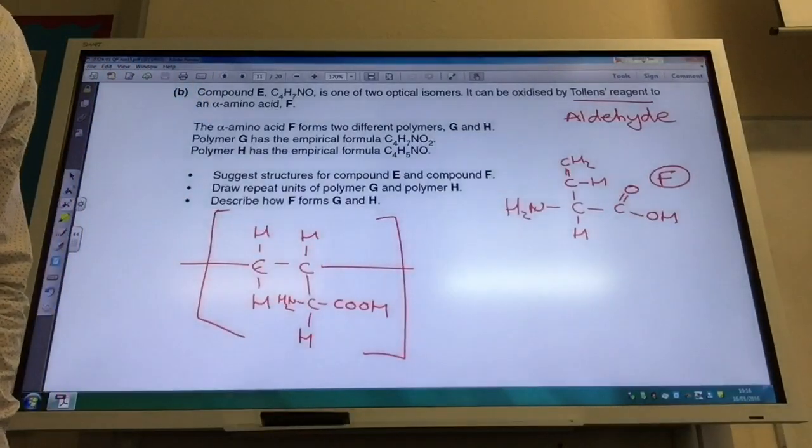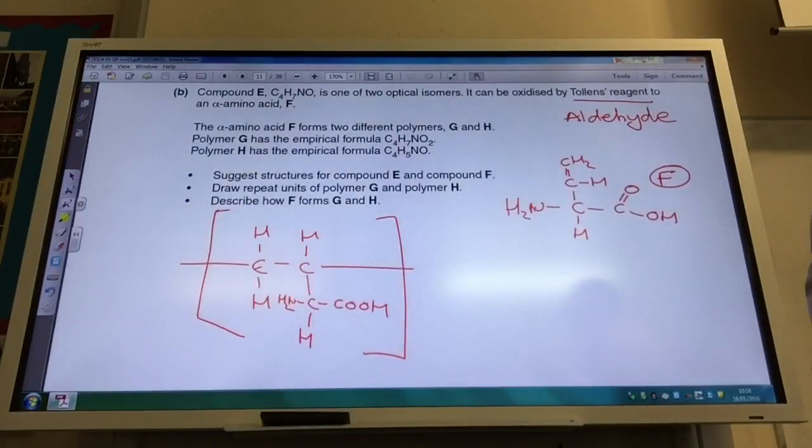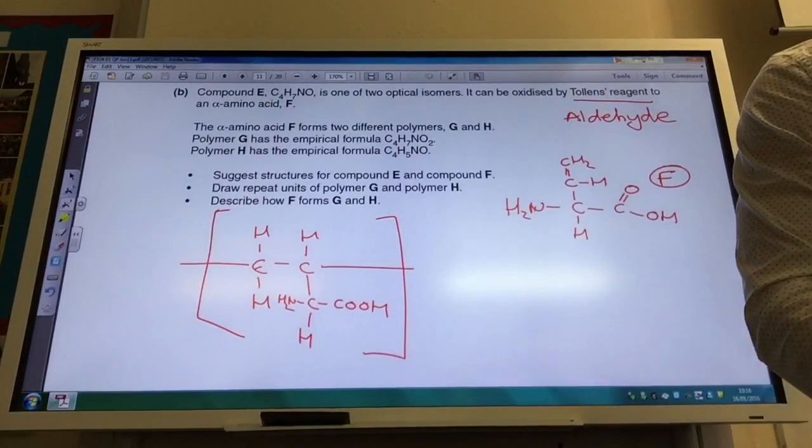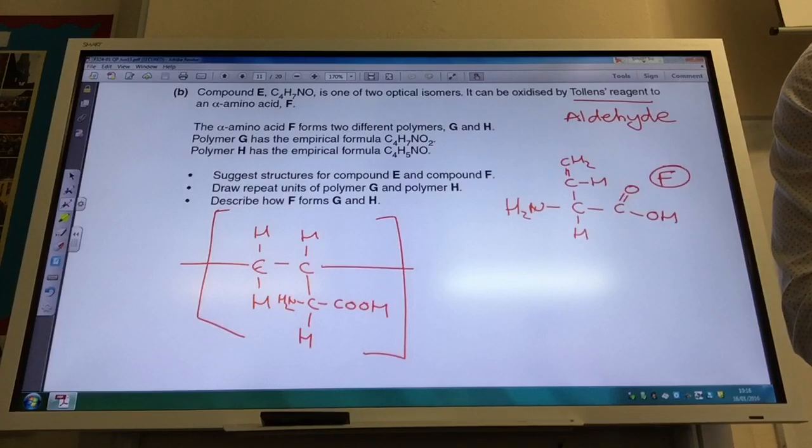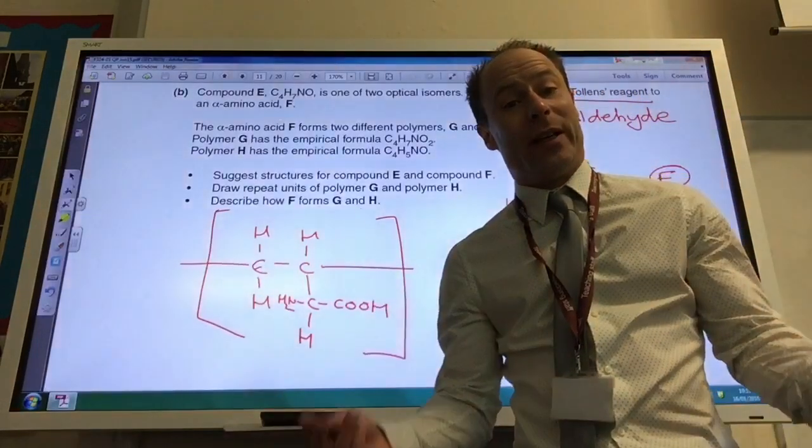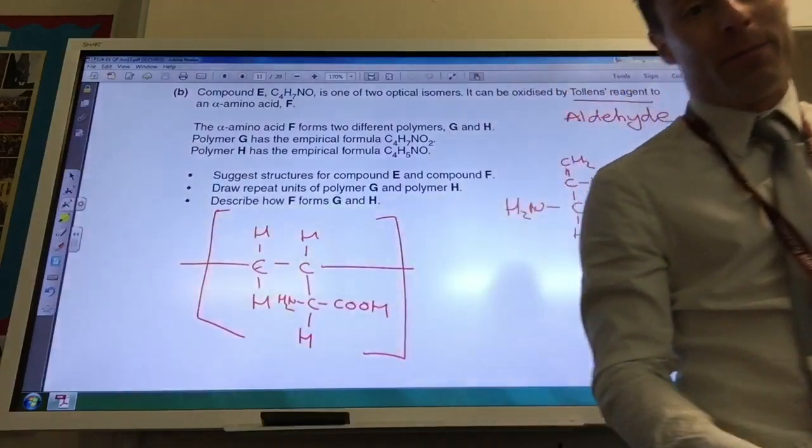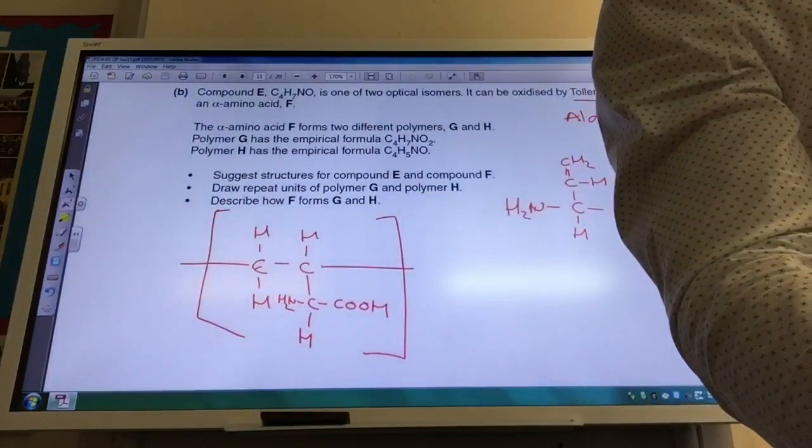So describe how F and G form. So for my addition polymer, it's addition across the carbon-carbon double bond. And for condensation polymer, a small molecule is eliminated, which in this case is water, to form a polyamide.